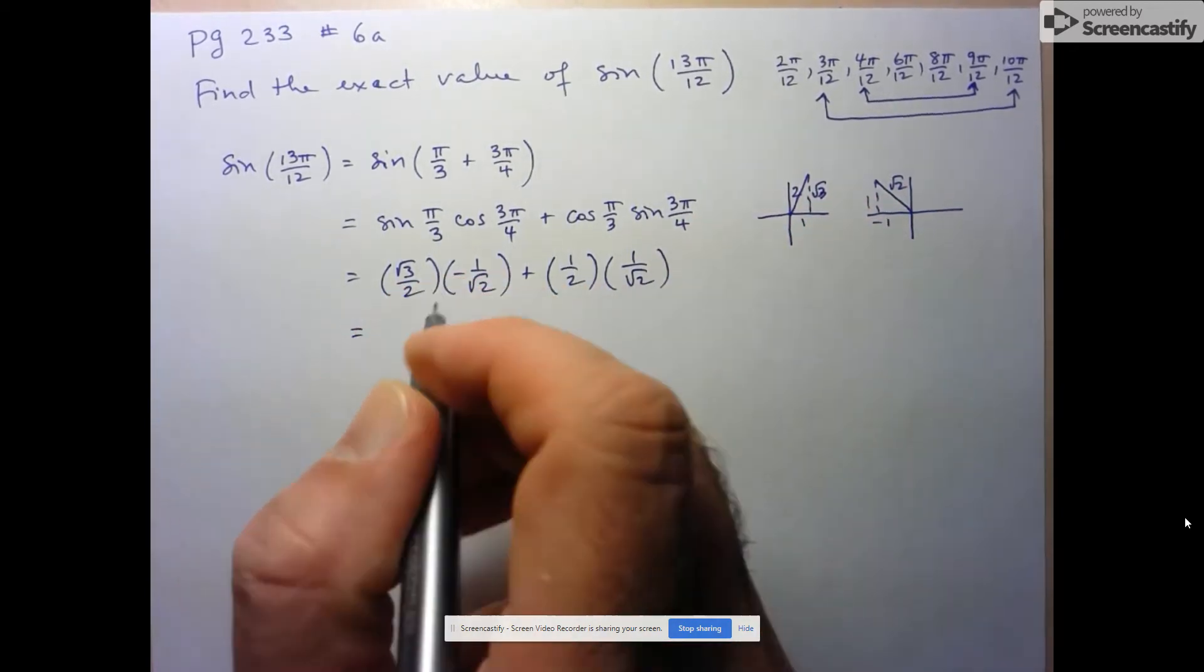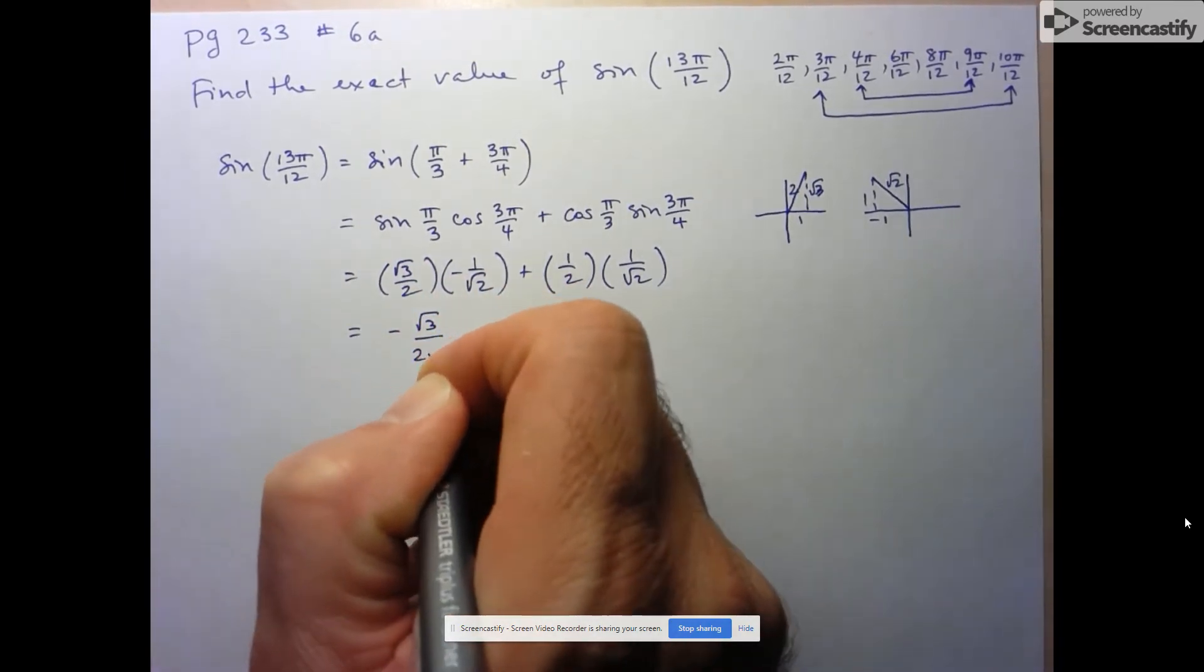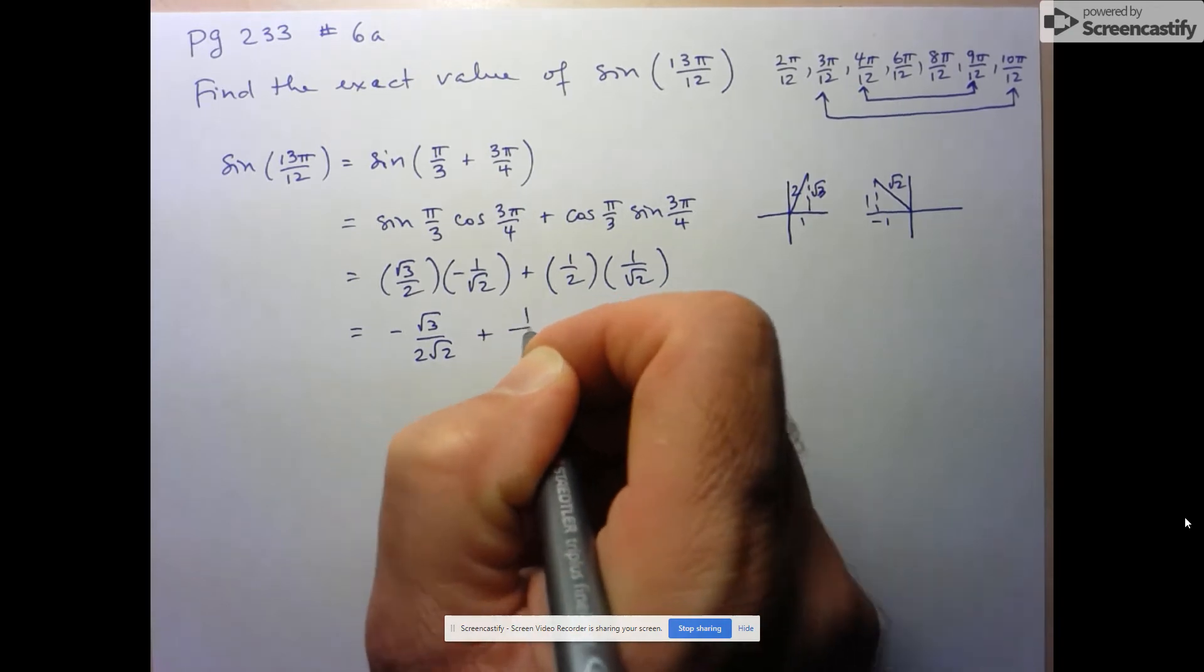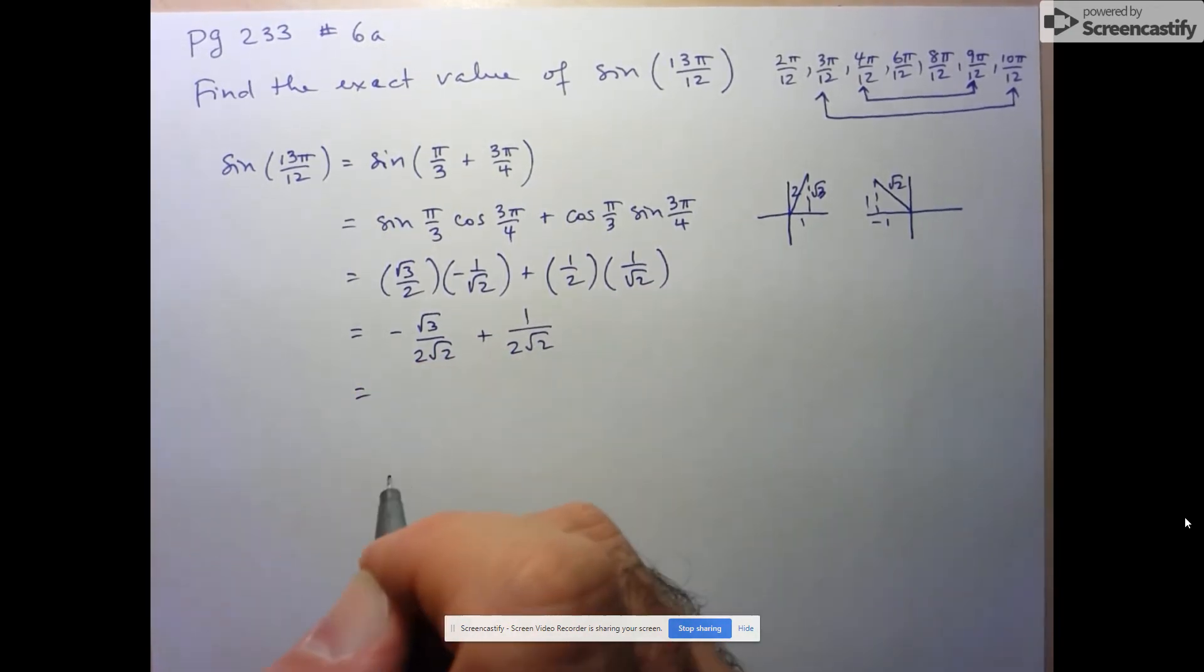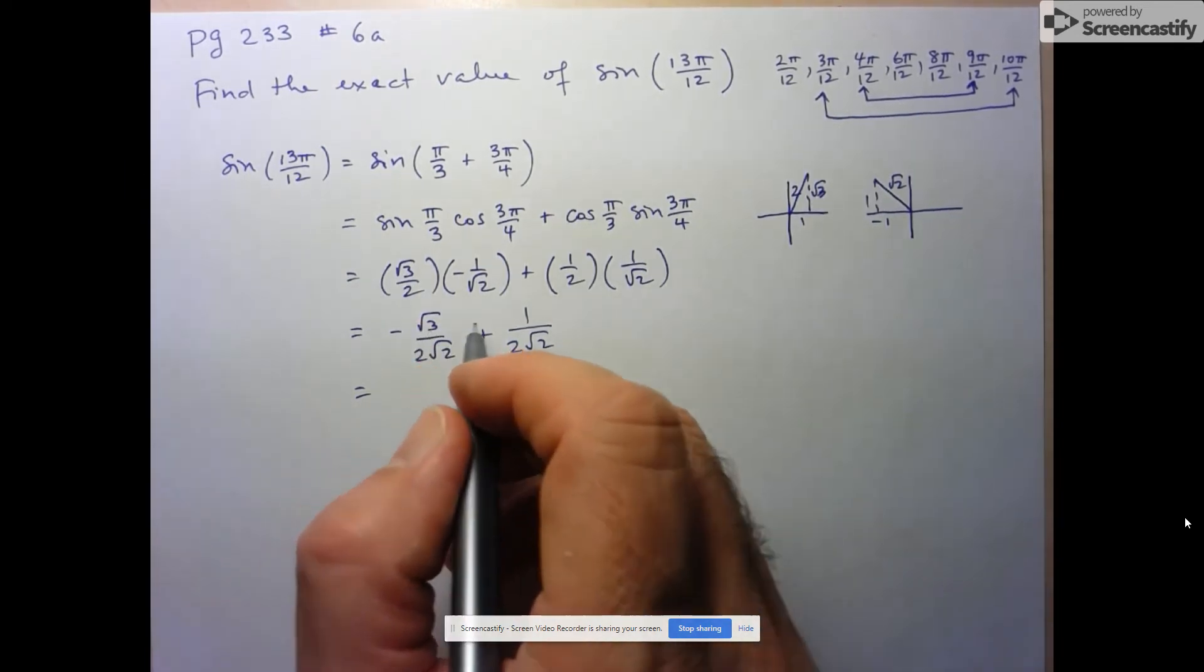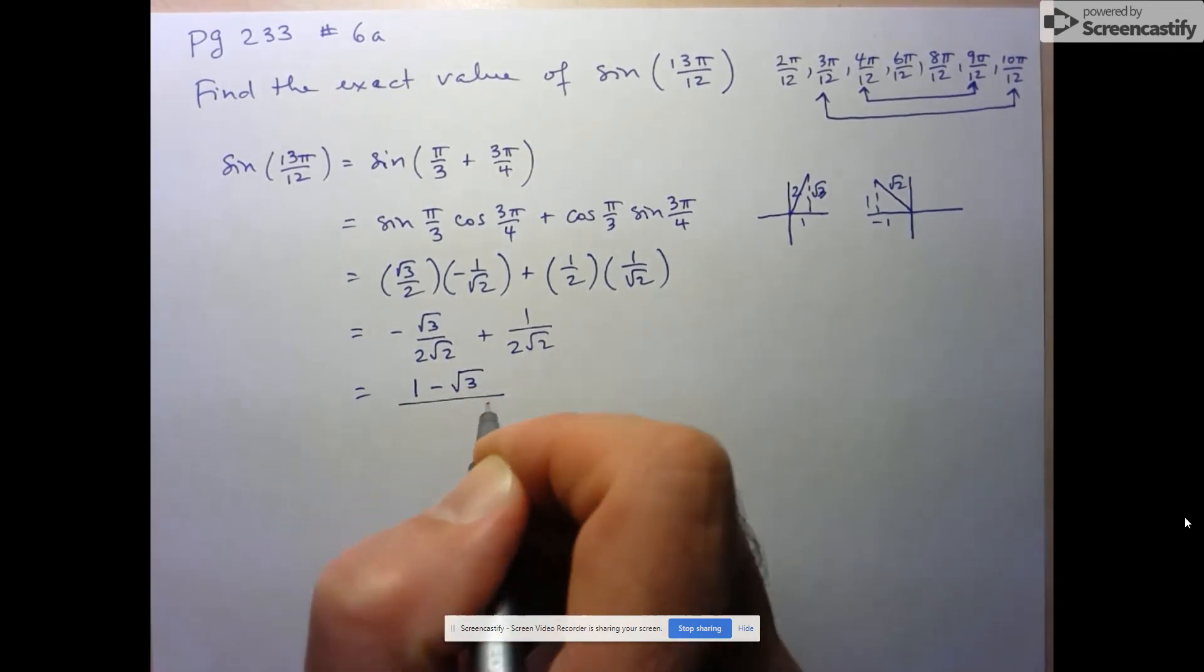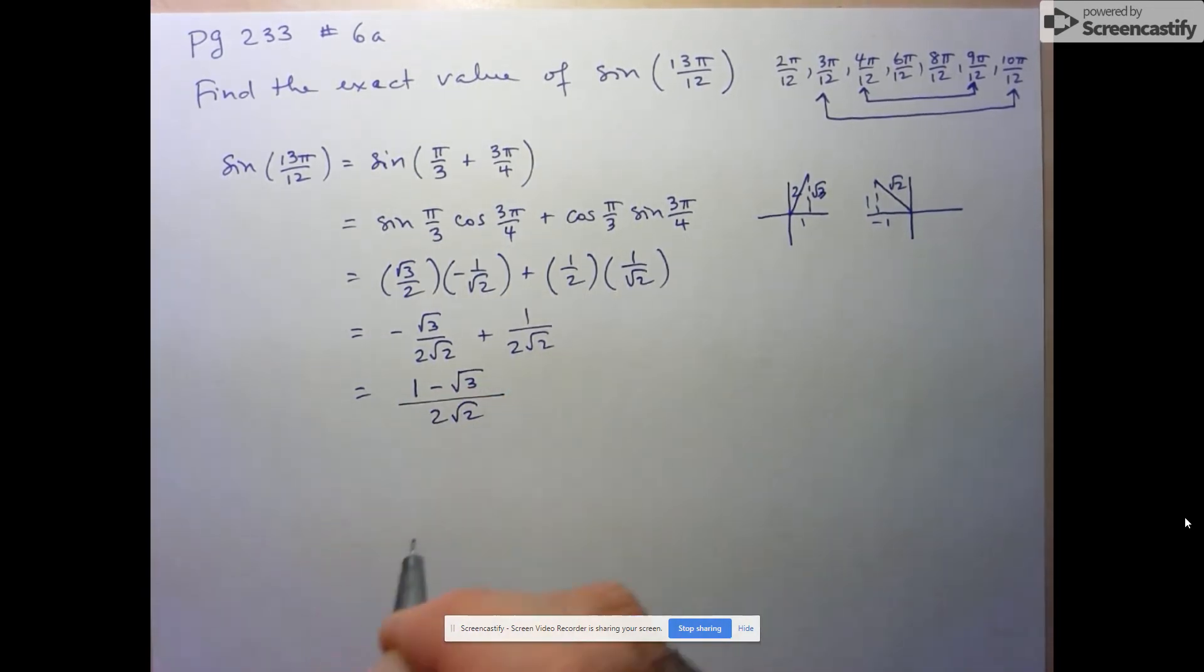Now I can just simplify this. This is going to be negative root 3 over 2 root 2 plus 1 over 2 root 2. We already have the same denominator, so I can just go ahead and add. Here, instead of writing negative root 3 plus 1, I'll just write it as 1 minus root 3 over 2 root 2. And there's my answer.